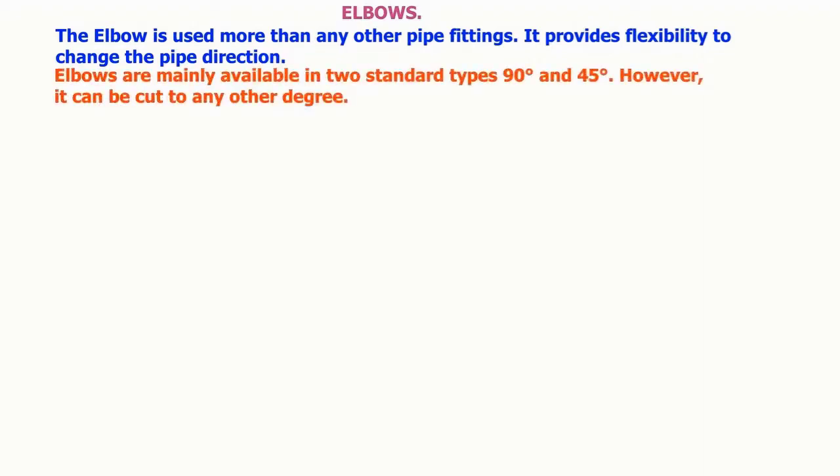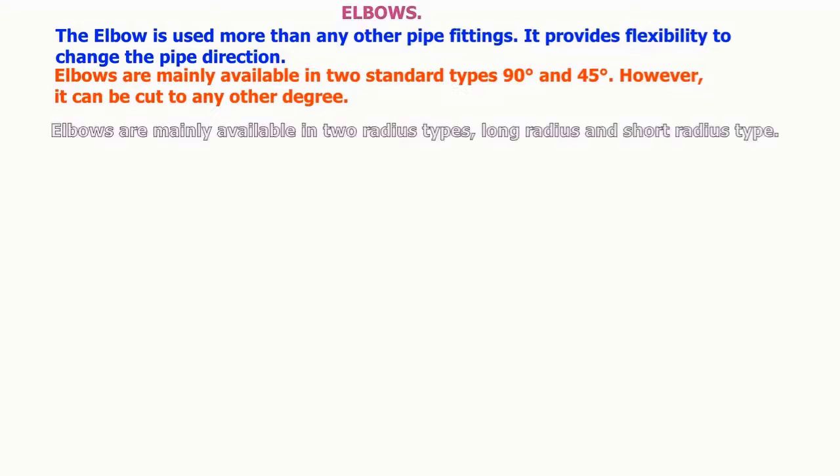The elbow is used more than any other pipe fittings. It provides flexibility to change the pipe direction. Elbows are mainly available in two standard types: 90 degrees and 45 degrees. However, it can be cut to any other degree. Elbows are mainly available in two radius types: long radius and short radius type.